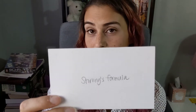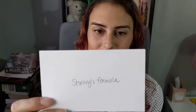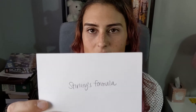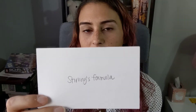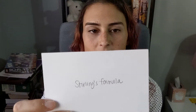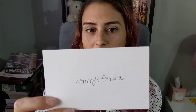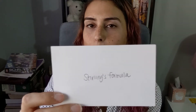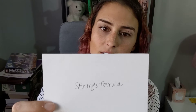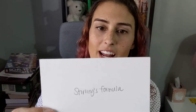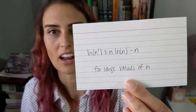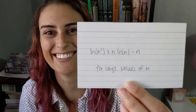Stirling's formula: for large values of N, the natural log of N factorial is approximately equal to N times the natural log of N minus N. That's a lot of N's.